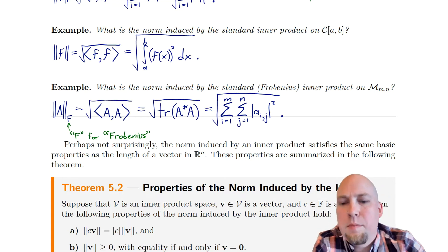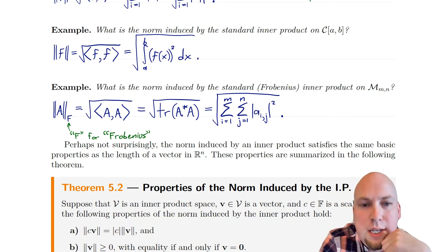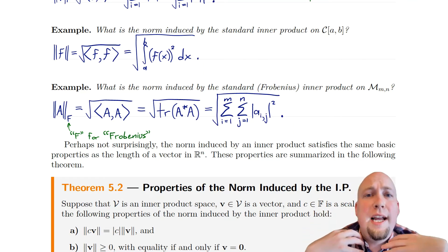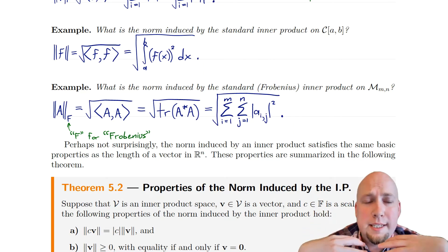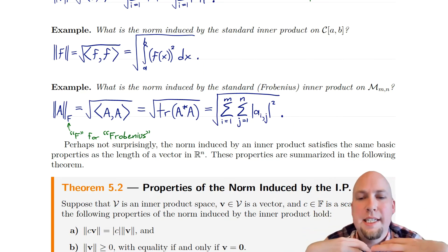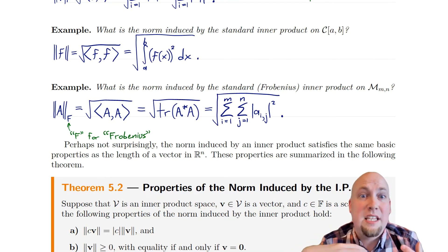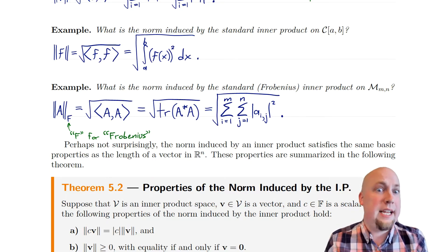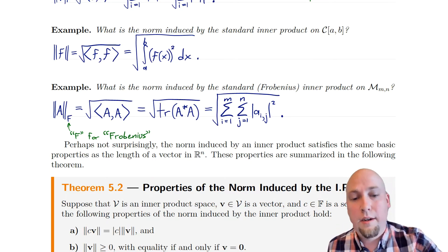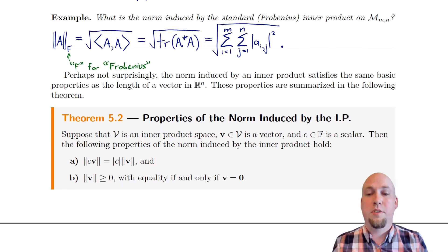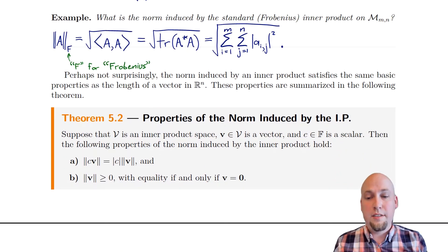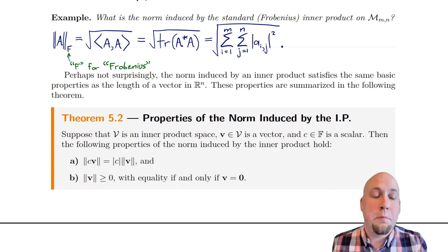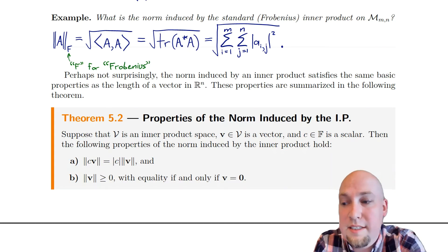So those are some norms induced by inner products. To justify the fact that we think of them as measuring how big something is, we should show that they satisfy properties that the length of a vector satisfies in R^m — that they behave like a length function should. Our next few theorems do that. Our first one pins down the easy properties that norms induced by inner products satisfy.